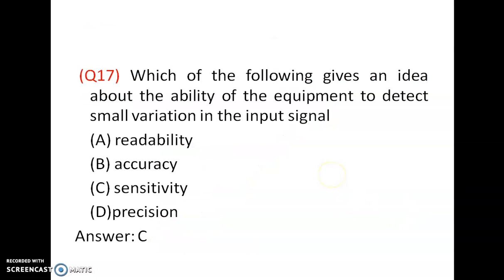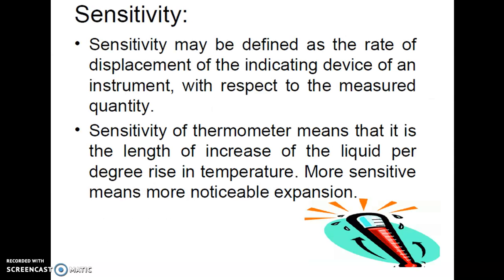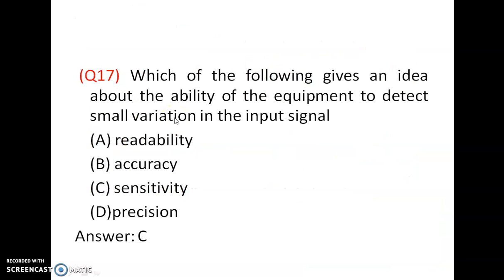Question number 17: Which of the following gives an idea about the ability of the equipment to detect small variation in the input signal? That is sensitivity. Sensitivity has the ability to detect very small variation of the input signal. Sensitivity may be defined as the rate of displacement of the indicating device of an instrument with respect to the measured quantity.